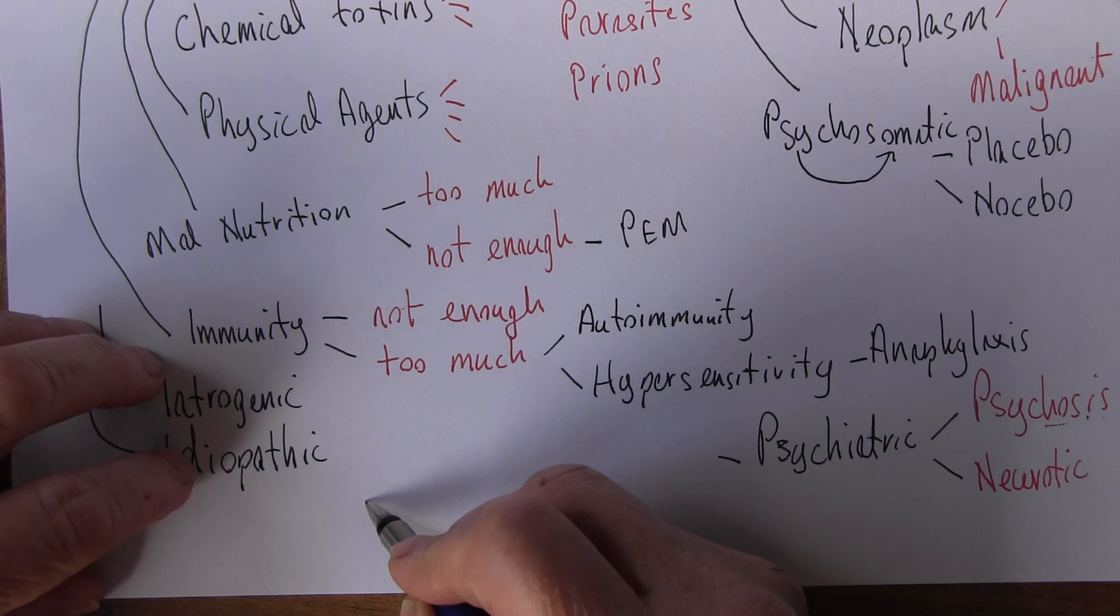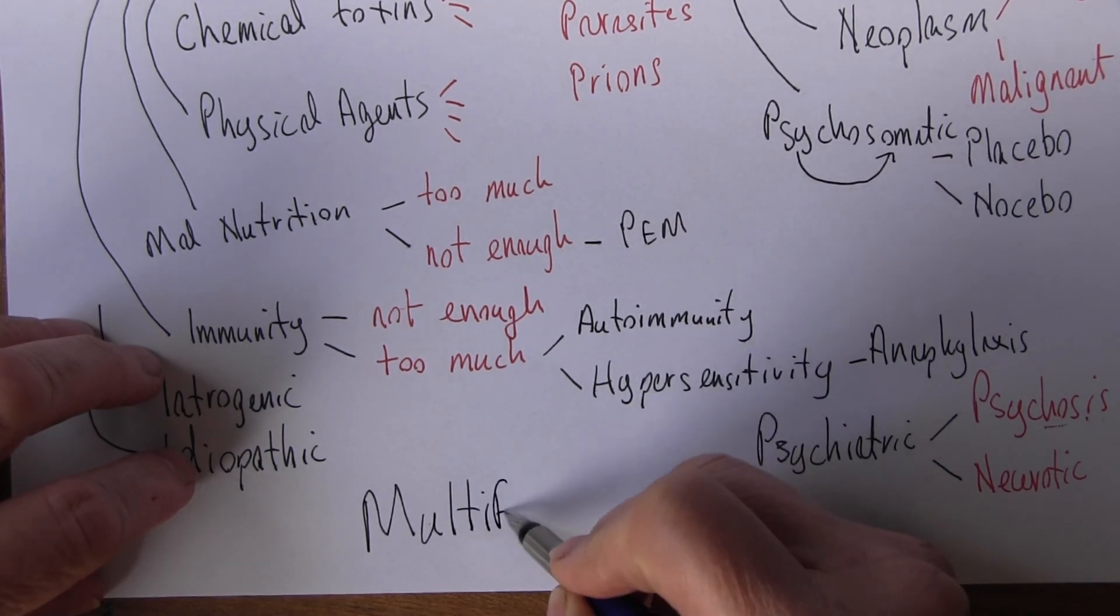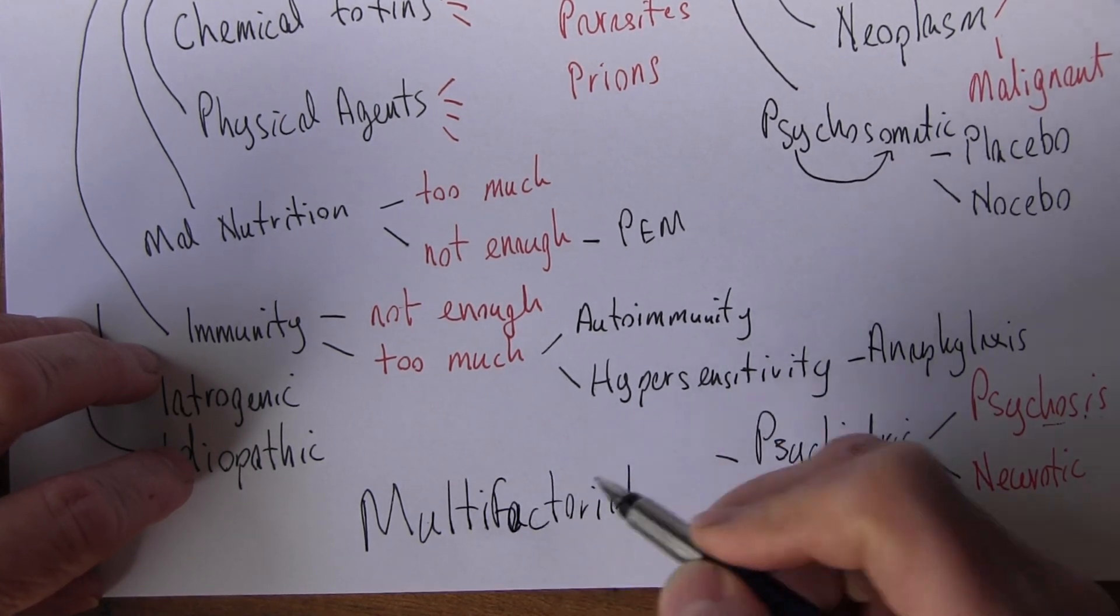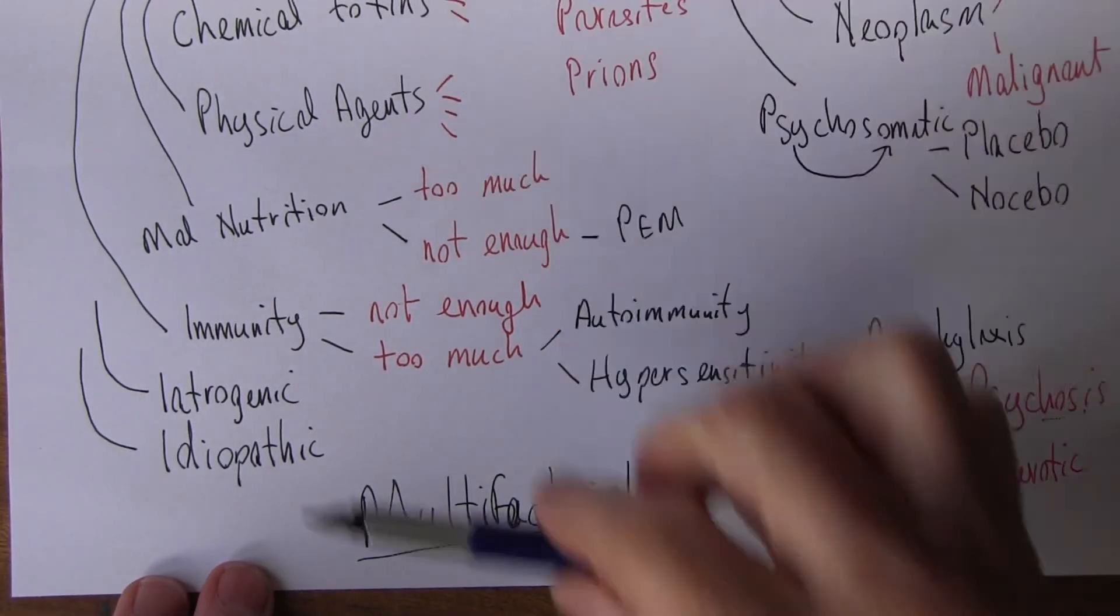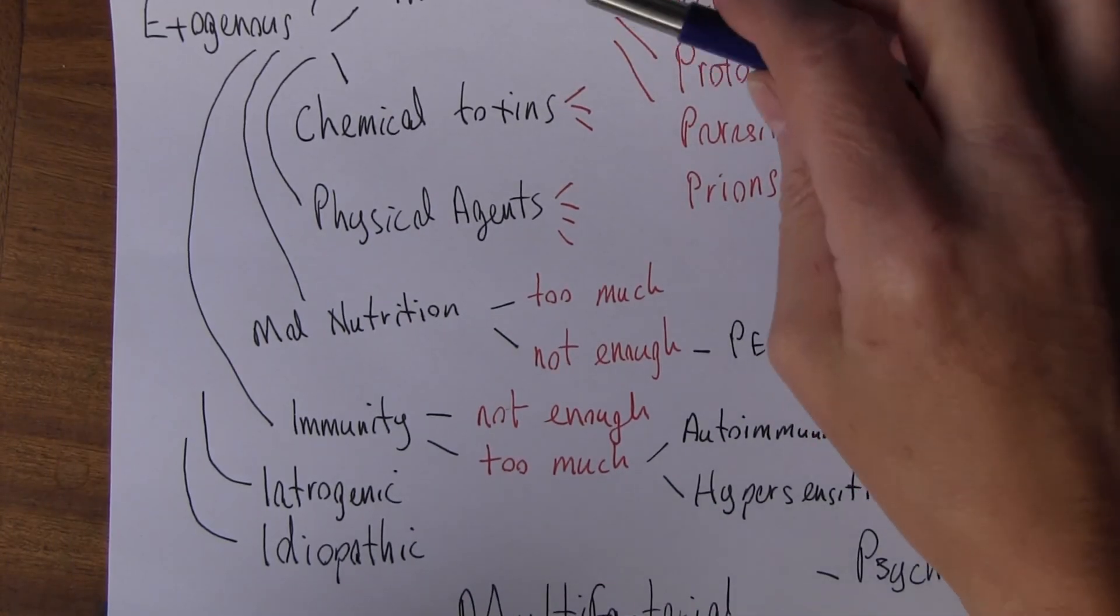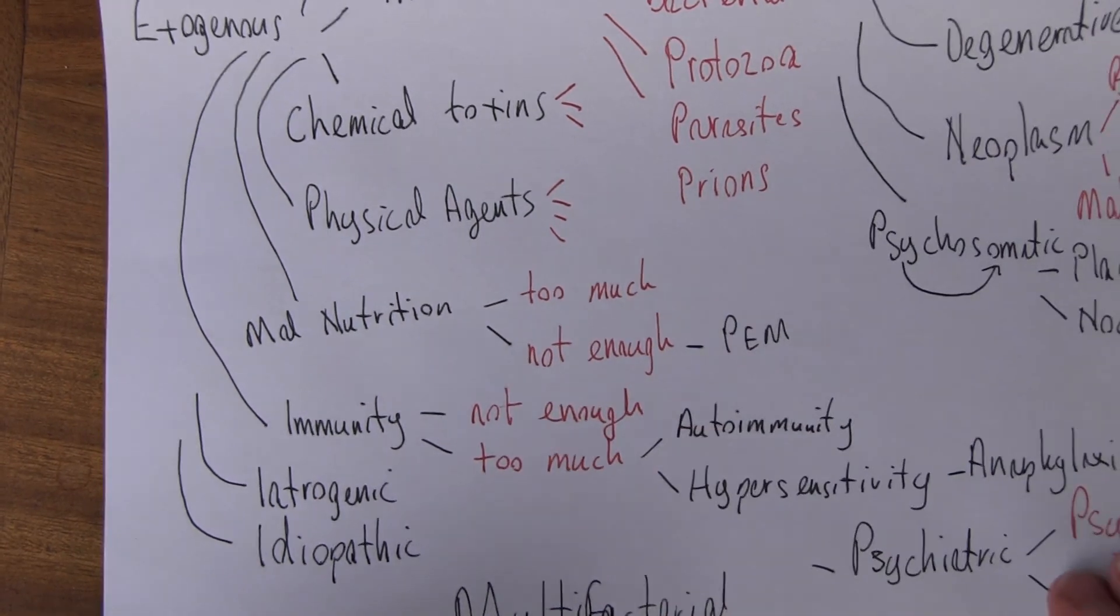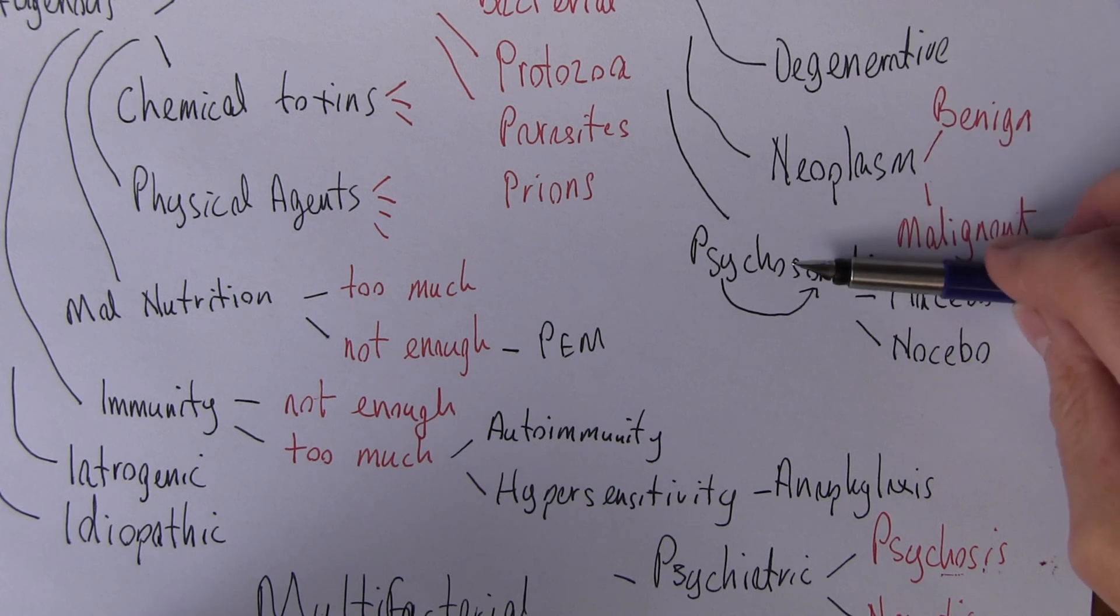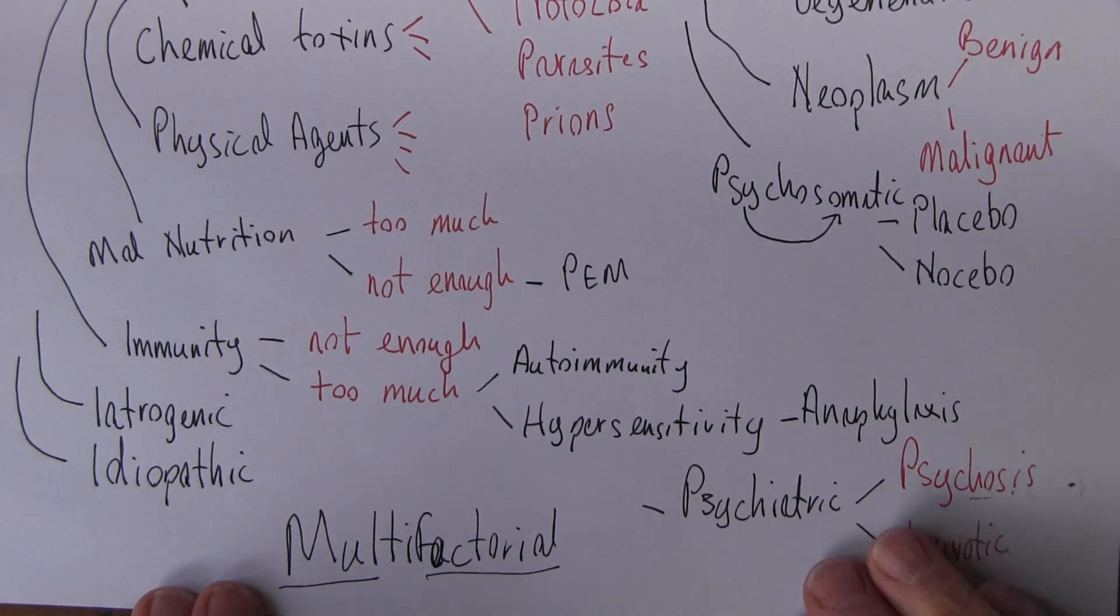And of course many conditions are multifactorial. Multifactorial - multi, many, many factors. Multifactorial. So many of these things working together. But it's worth thinking about: Is this disease caused by infection, chemical toxins, physical agents, malnutrition, immunity? Is it iatrogenic? Is it idiopathic? Is it degenerative? Is it neoplastic? Is it psychosomatic? And how do these factors work together? How is it multifactorial?